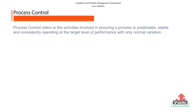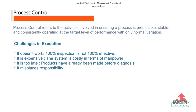The slide here shows the formal definition of process control: process control refers to the activities involved in ensuring the process is predictable, stable and consistently operating at the target level of performance with only normal variation. The logical way to overcome the challenges associated with this type of system is to apply preventive techniques at the operation stage to ensure that the product is produced to the required quality. This approach is based on statistical process control, which is a statistical method of data collection and analysis that works to monitor the operation and control it to its maximum potential, enabling the operation to be carried out in confidence that the final product will be good.